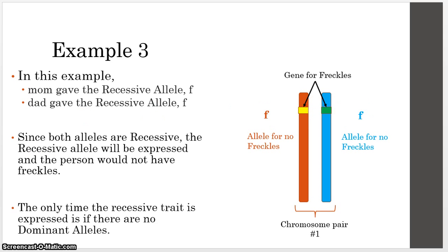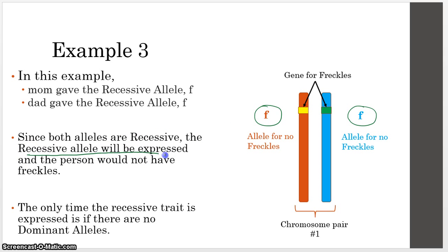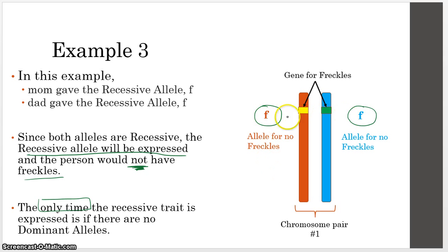In example three, mom gave you the recessive allele for no freckles, and dad also gave you the recessive allele for no freckles. Since both are recessive, the recessive allele will be expressed, and this person will not have freckles. This is the only time a recessive trait can be expressed — it has to be paired with two recessive alleles.